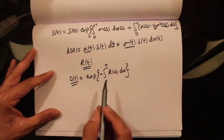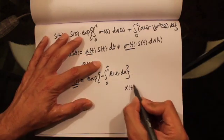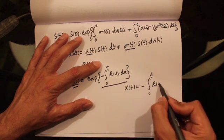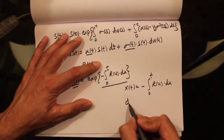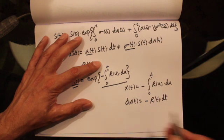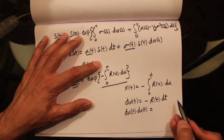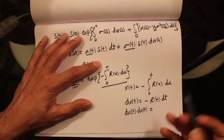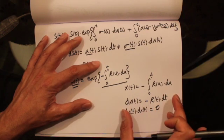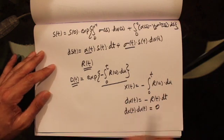Now if we define X(t) as the exponent, i.e., minus the integral from 0 to t of r(u) du, then dX(t) would be minus r(t) dt. And dX(t) times dX(t), which is the quadratic variation term, gives a dt·dt term, which equals 0 according to the Itô multiplication table. So this process has zero quadratic variation, even though it is random and adapted.